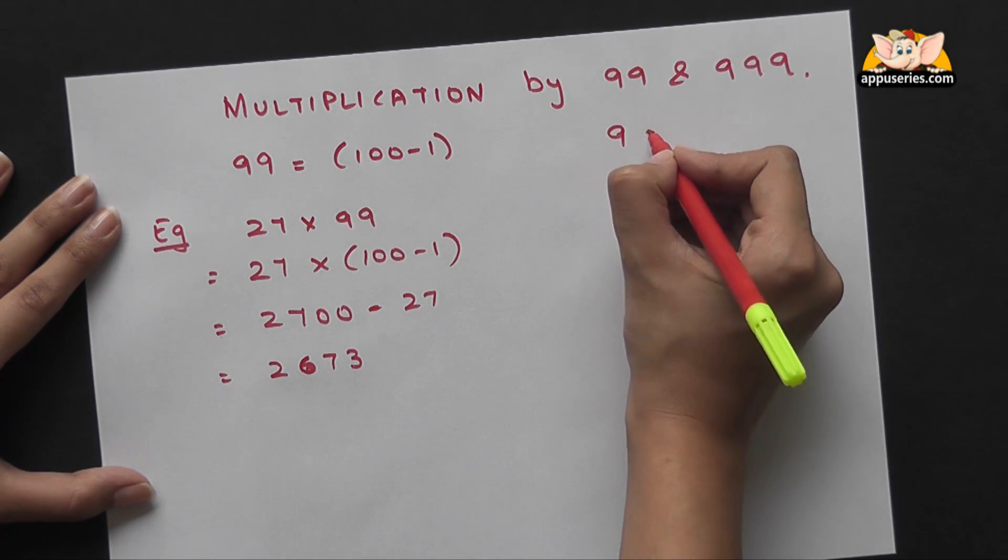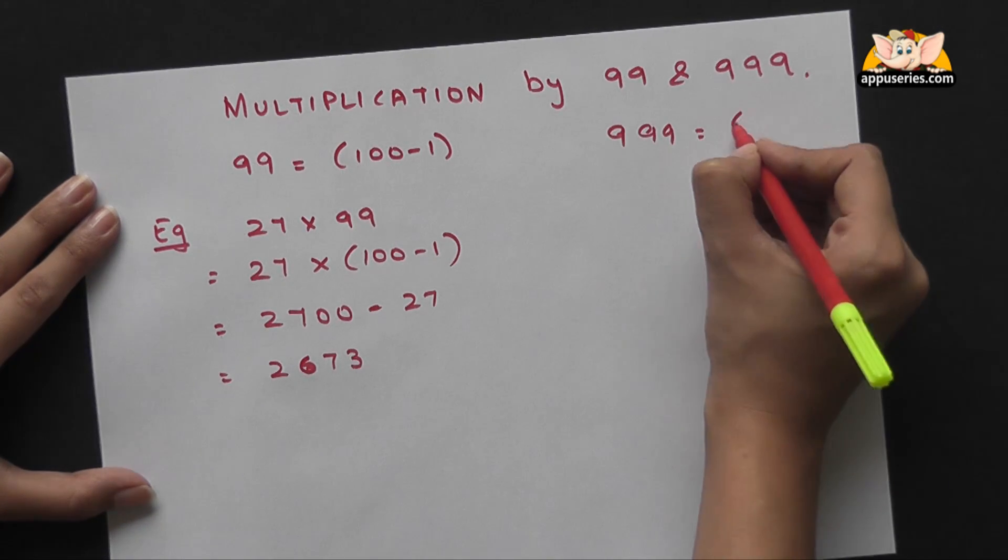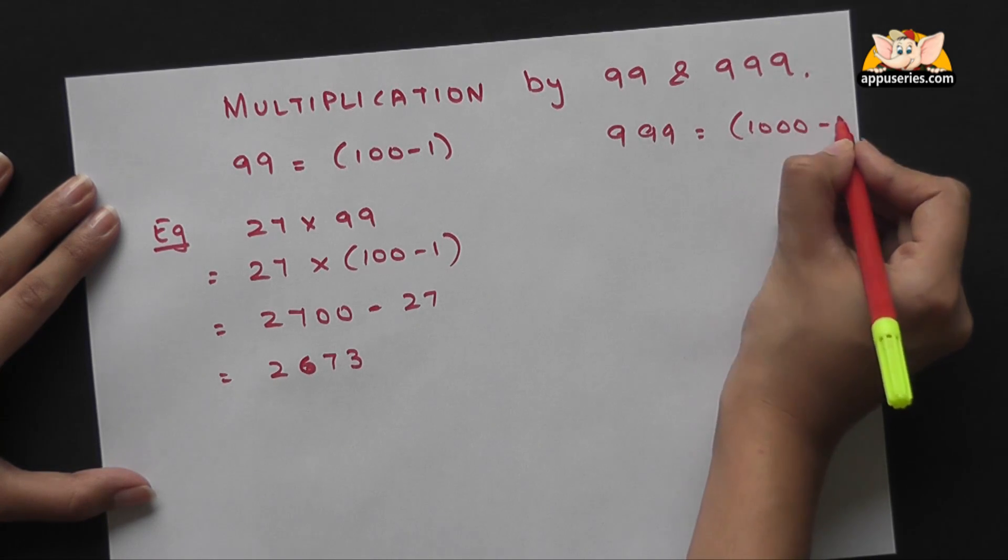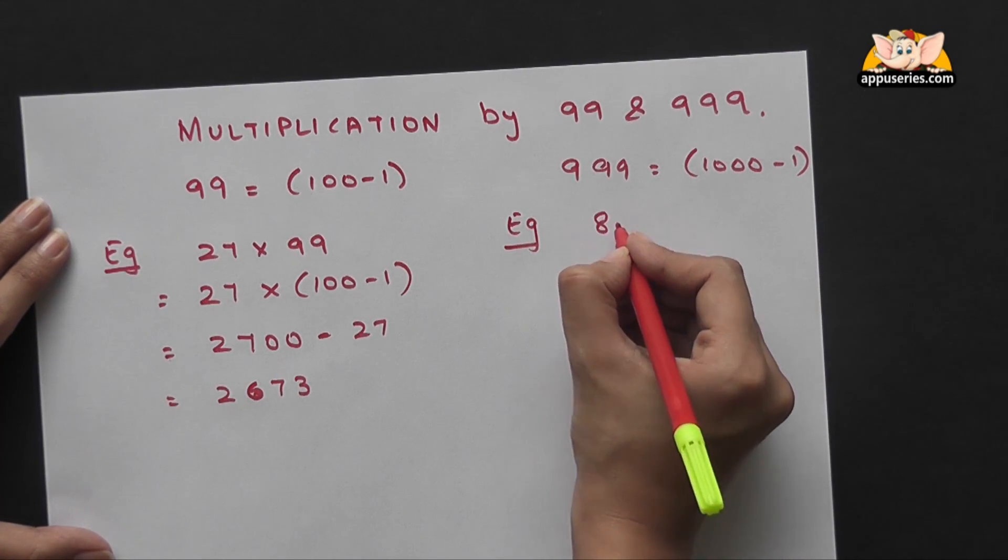Now 999 is again 1000-1. So we'll take an example of 84 into 999.